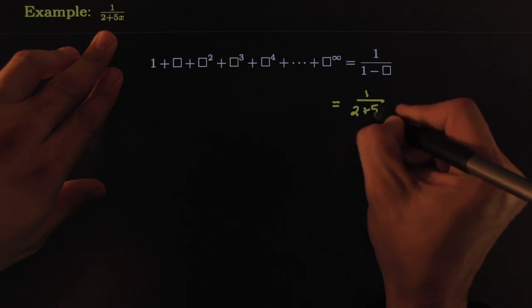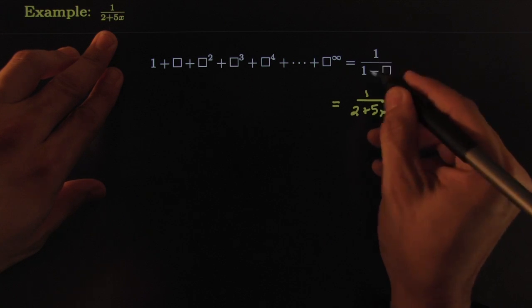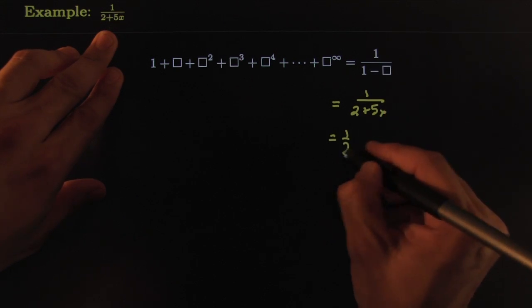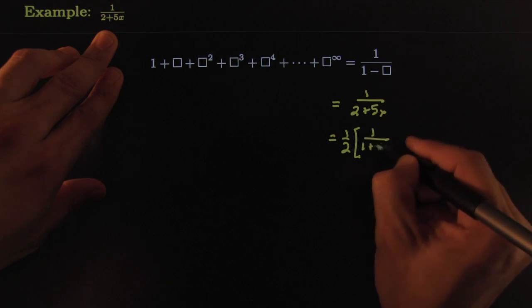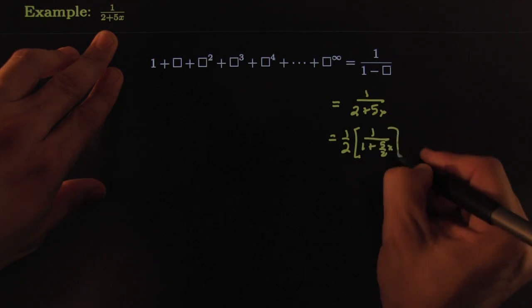1 over 2 plus 5 over X. Okay, that's not matching my 1 over 1, but I could factor out a 1 half. That would leave a 1 over 1 plus 5 halves X.